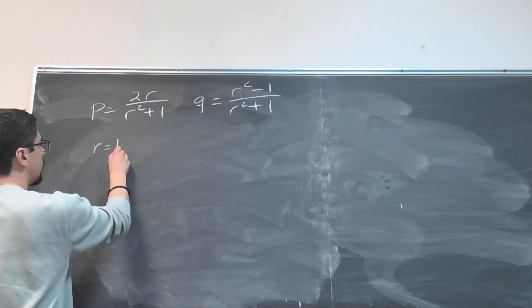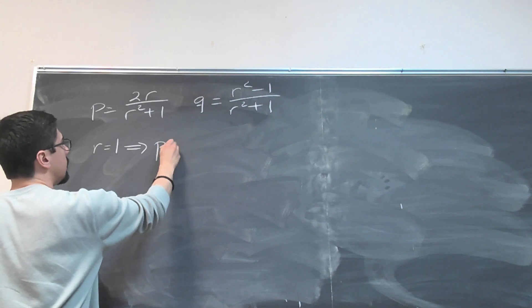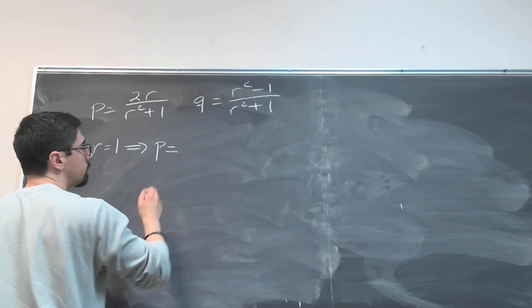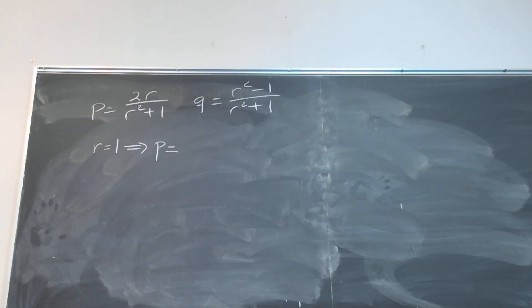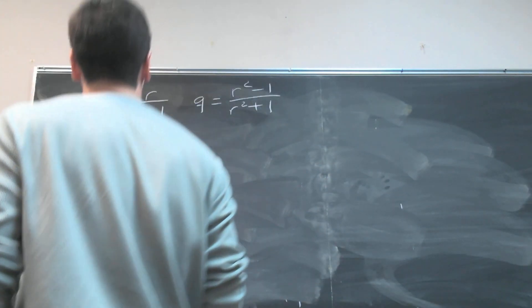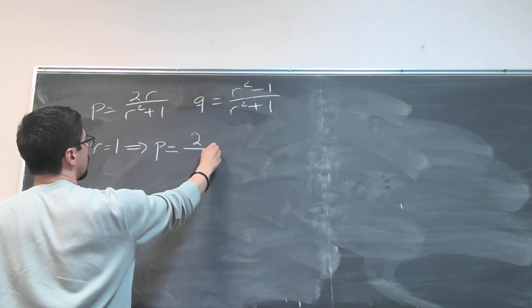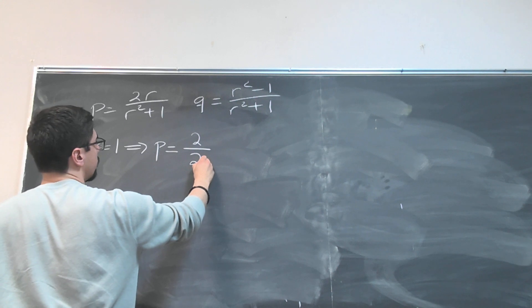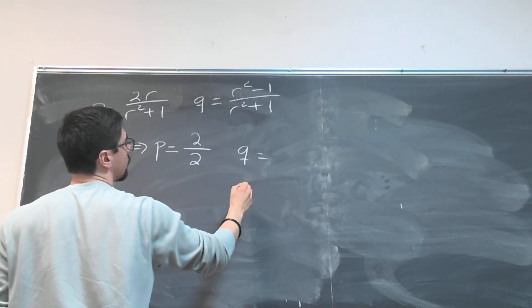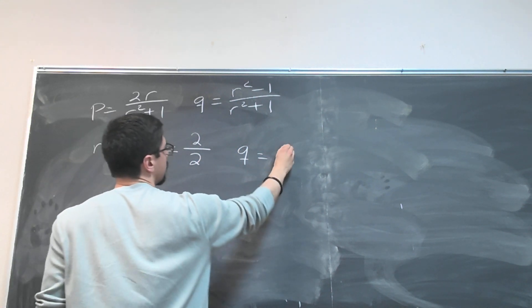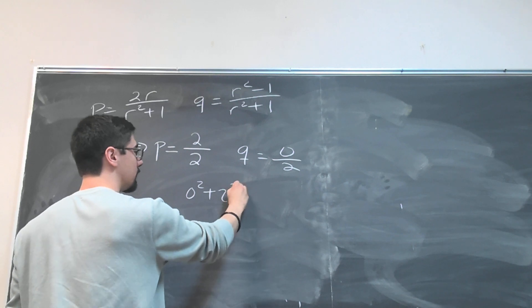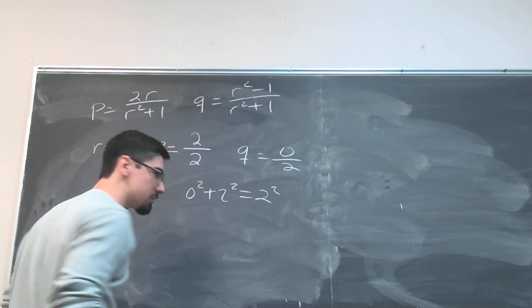I guess we could try 0 too but that's kind of boring. So we'll do r equals 1. When we do that, that gives us that p is equal to 2 over 2 and q is equal to 0 over 2. And so I guess we do have a silly example here of 0 squared plus 2 squared does in fact equal 2 squared. So let's try something a bit more interesting then.